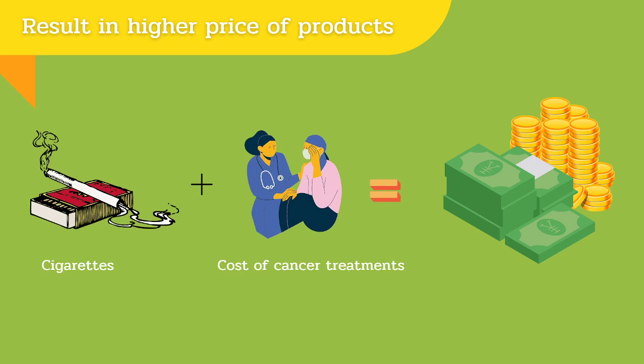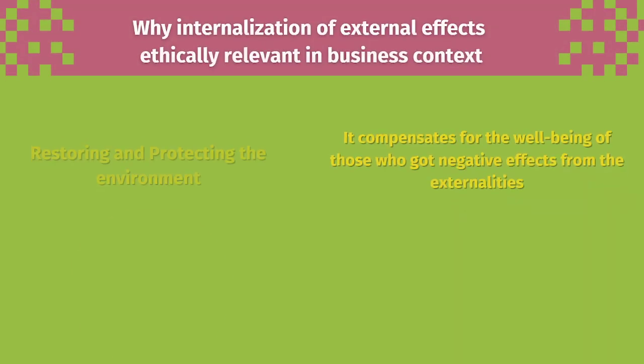The internalization of external effects results in a higher price of products. For example, cigarettes would be much more expensive if the cost of cancer treatment associated with smoking were factored in. According to the market supply and demand principle, the demand for cigarettes would automatically fall due to the rising cigarette price.